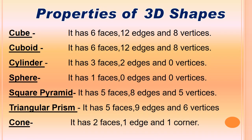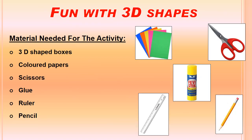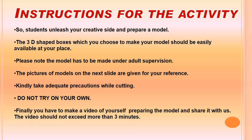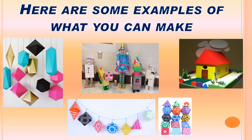So for this fun activity, you need to take 3D shaped boxes which are easily available at your place. For example, for a cuboid you can take a shoe box. For a cube, you can take a chocolate box. All you have to do is prepare a model using these boxes. It is absolutely fine if you do not have all of the 3D shaped boxes. You can prepare the model with whatever material you have at your disposal. The examples of the models have been given for your reference in the PPT.